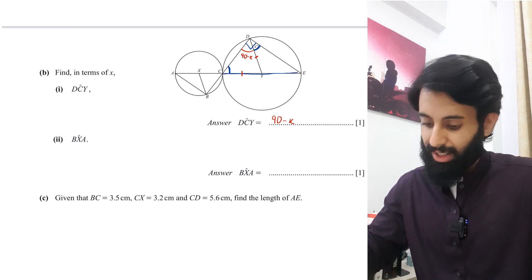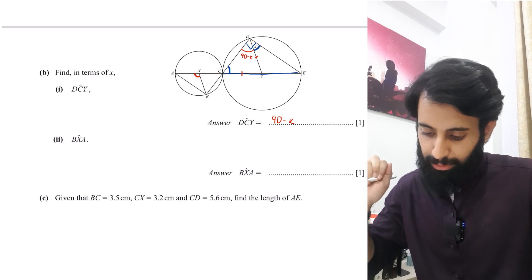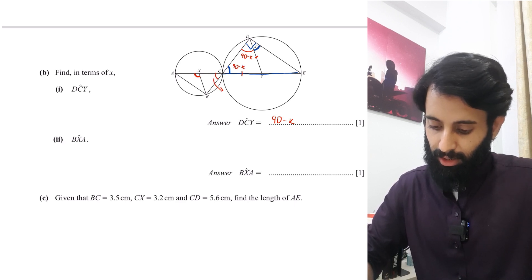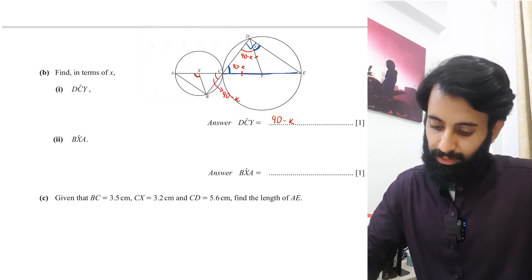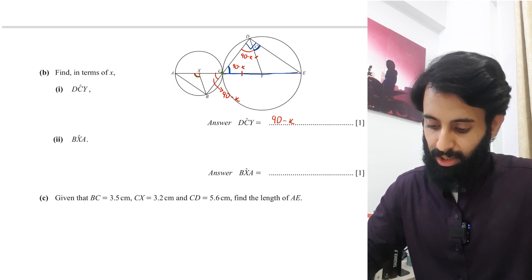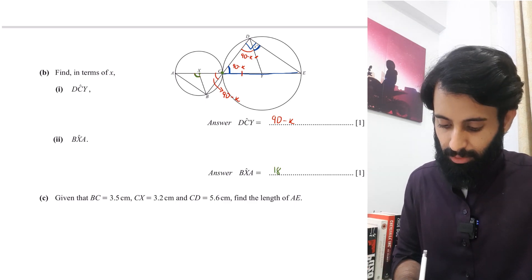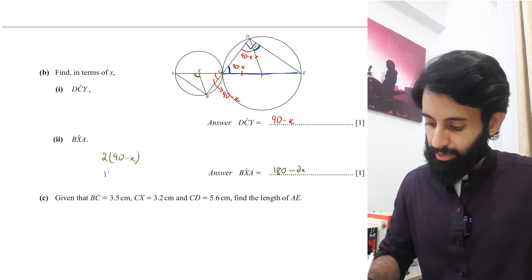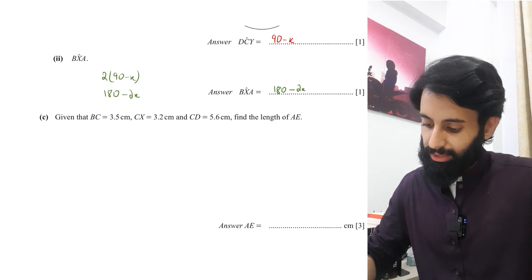Next, we find angle BXA. Angle XCB equals 90 minus x. Since angle BXA is the angle at the center and angle BCX is the angle at the circumference, the angle at the center is twice the angle at the circumference. So angle BXA equals 2 times (90 minus x) which is 180 minus 2x.